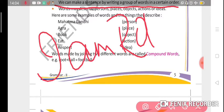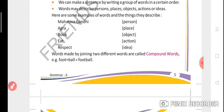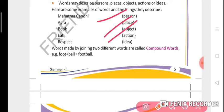Words may describe persons, places, objects, actions, or ideas. Example of person: Mahatma Gandhi. Place: Agra. Object: book. Action: eat. And idea: respect.